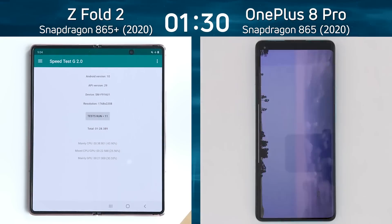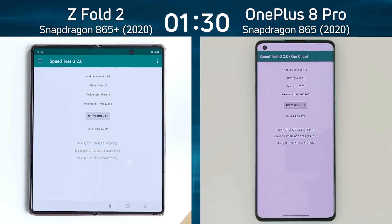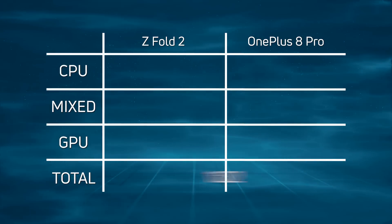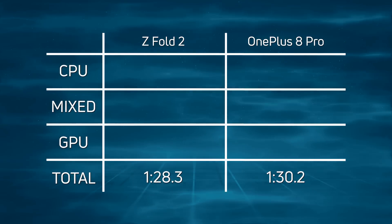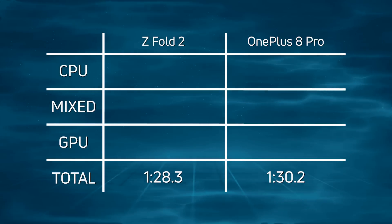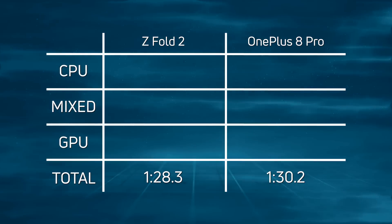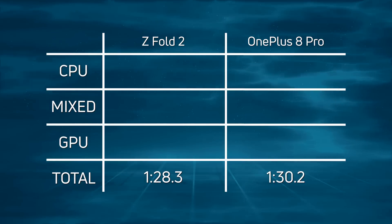The final times: 1 minute 28.3 seconds for the Z Fold 2, and then 1.9 seconds later came in the OnePlus 8 Pro at 1 minute 30.2 seconds. A win by the Z Fold 2.